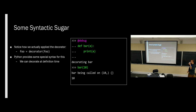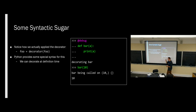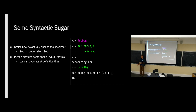The decorator only applies to the immediately following function definition, not any other functions defined after it. A student asks about the trailing comma — that's actually a syntax thing in Python. If you have a tuple with one element, Python always expects it written as parentheses, thing, comma. You have to include a trailing comma for single-element tuples, because otherwise Python can't tell the difference between that and just a parenthesized expression.